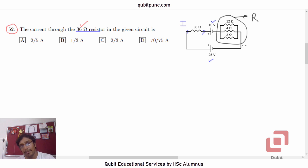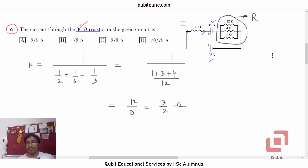So the first step to solve this problem has to be finding the equivalent resistance. So what will it be? It will be 1 upon 1 upon 12 plus 1 upon 4 plus 1 upon 3. That is R, because they are in parallel. Take the LCM here. That will be 12. So it will be 12 by 8 or 3 by 2.